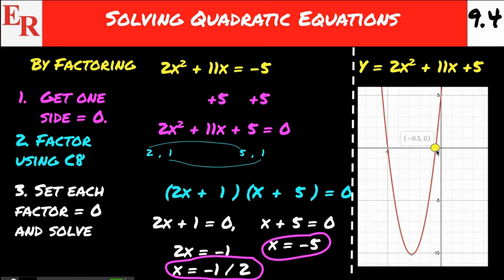And you can see that there's one of them right here at negative 1 half, which was one of our solutions by factoring, and one over here at negative 5, which was another one of our solutions by factoring.